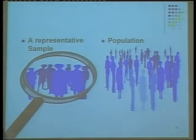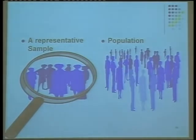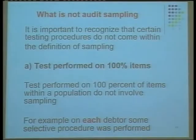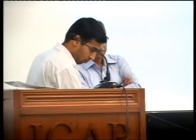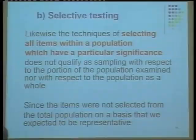Moving to representative sample — what is not audit sampling is extremely important. As stated, a test performed on 100% of items in the population is not sampling. Likewise, selective testing is also not audit sampling, specifically where items are selected because they have particular significance. Why does it not qualify? When we select certain items, we are not giving the rest of the items any chance of being selected. That is the primary reason selective testing is not sampling.